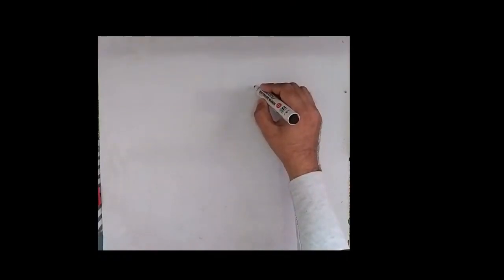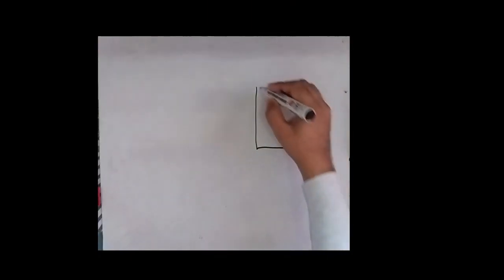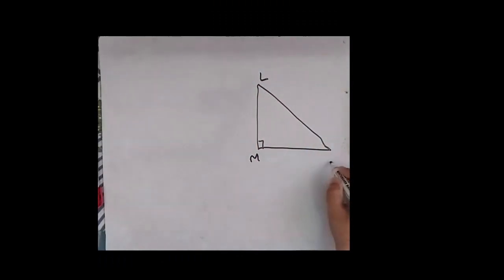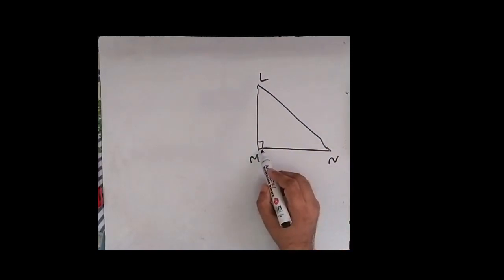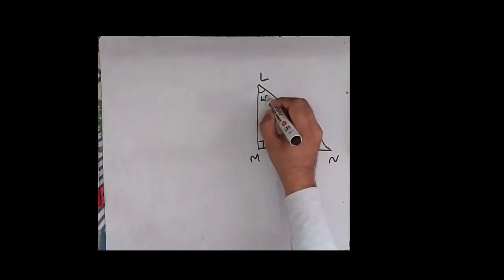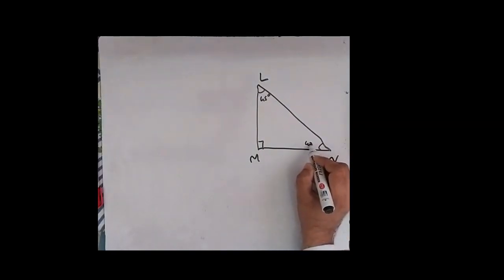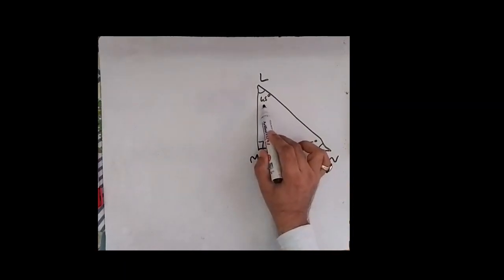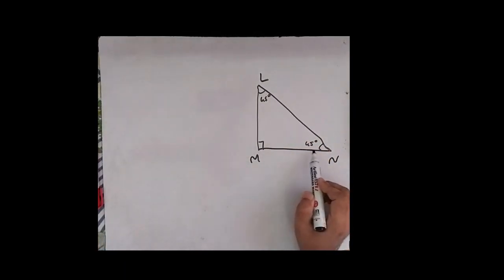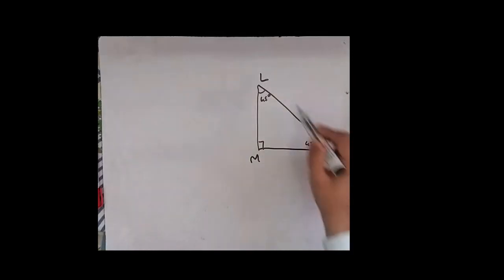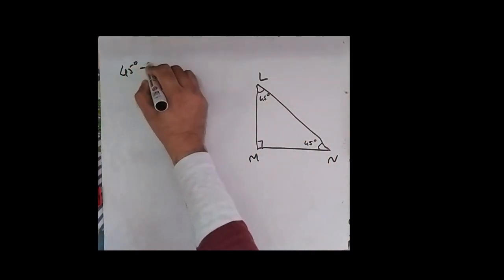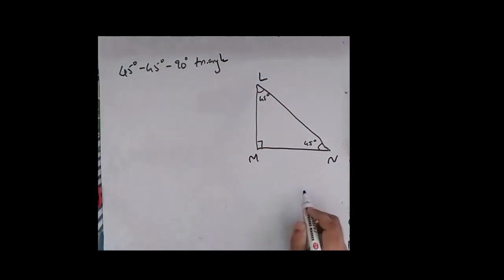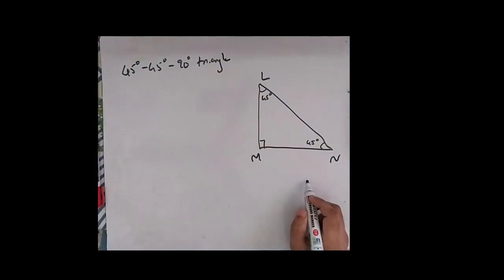Now we will see the 45-45-90 theorem. Here we require again one right angle triangle, say triangle LMN. Angle M is 90 degrees, angle L is 45 degrees, and angle N is also 45 degrees. Such triangles where one angle is 45, one angle is 90, and the other angle is also 45 are called 45-45-90 degree triangles, and we can apply the 45-45-90 theorem to them.